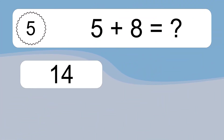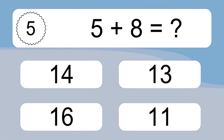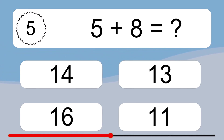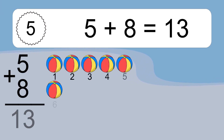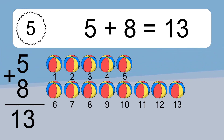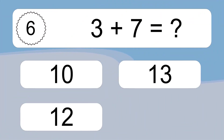5 plus 8 equals what? 5 plus 8 equals 13. 1, 2, 3, 4, 5, 6, 7, 8, 9, 10, 11, 12, 13.